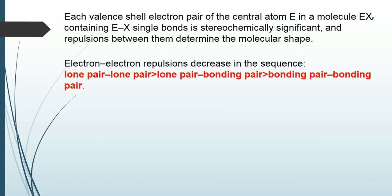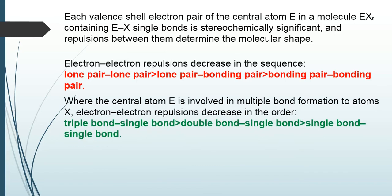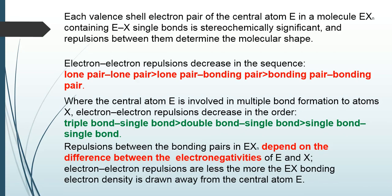The electron-electron repulsion decreases in the sequence: lone pair–lone pair > lone pair–bond pair > bond pair–bond pair. Where the central atom E is involved in multiple bond formation, the electron-electron repulsion decreases in the order: triple bond > double bond > single bond.